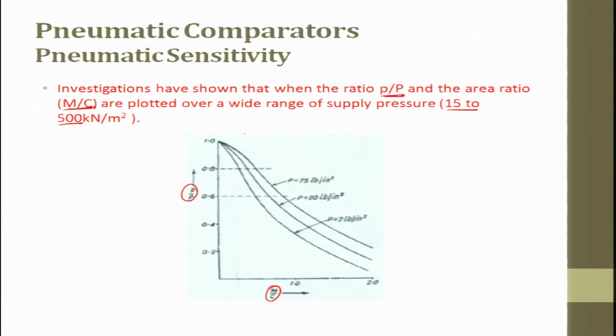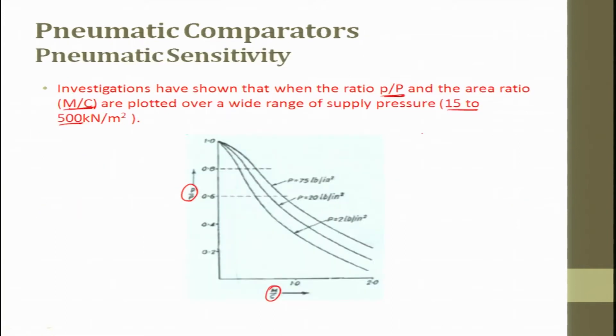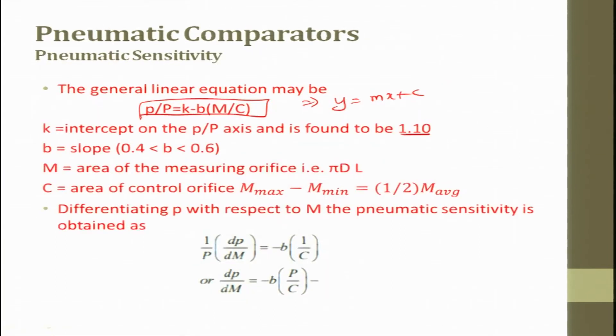The general linear equation may be written in this form, this is nothing but basic linear equation Y equal to M x plus C. We are trying to take this linear equation bring it here, why linear? Because linear is a place where we can try to dictate or demand what output we want. Where K is the intercept of P by P axis, it is found to be 1.10, and B is the slope which varies from 0.4 to 0.6. M is the area which is given pi D L and C is the area of controlled orifice which is M max minus M in which is half M average. Differentiating P with respect to M what we get is the sensitivity of the pneumatic system. This is nothing but this. Now what are we trying to talk about? We are trying to talk about the sensitivity, how much accurate or what is the resolution, how do you improve the resolution is nothing but the sensitivity.